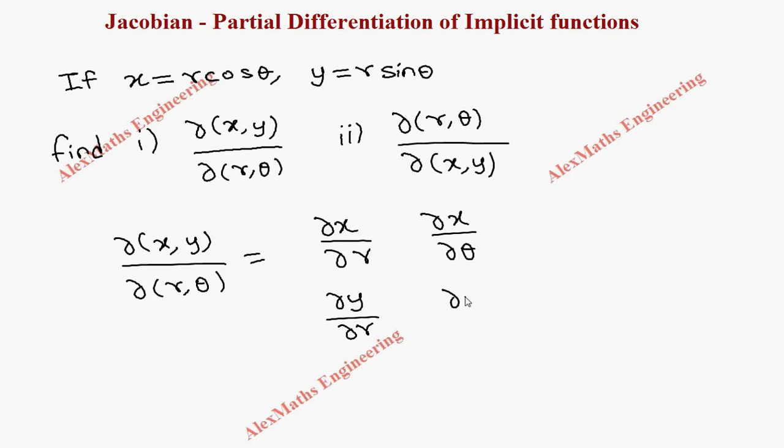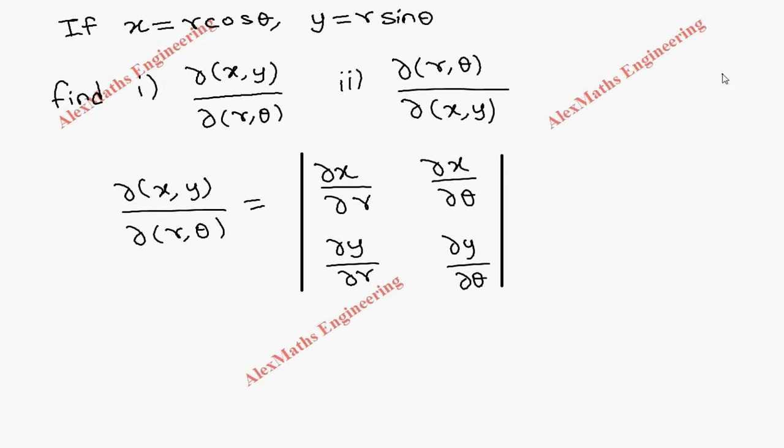Now from x we have to find ∂x/∂r. The partial derivative of x with respect to r gives us: r differentiation is 1 and cos θ is constant, so we get cos θ. For ∂x/∂θ, r is constant so r will remain as is, and differentiation of cos θ is -sin θ.